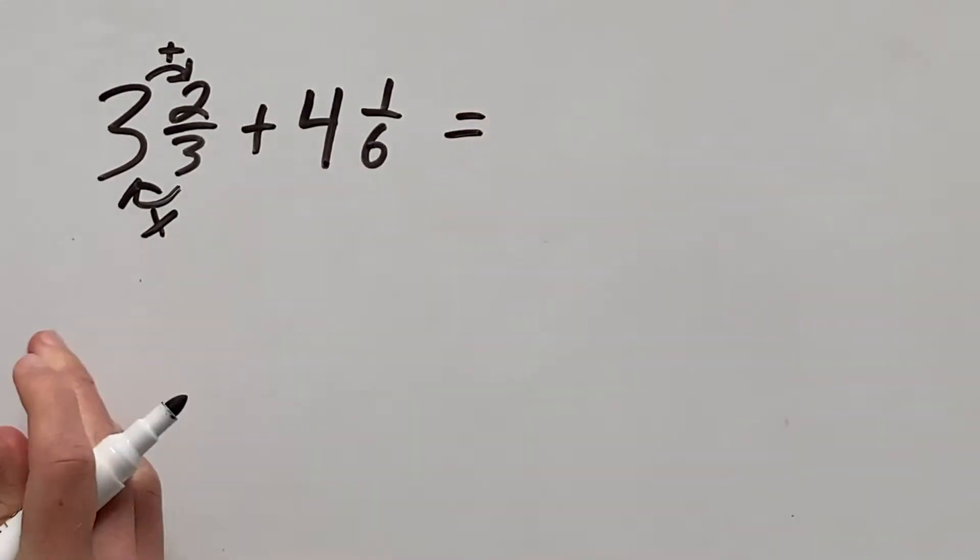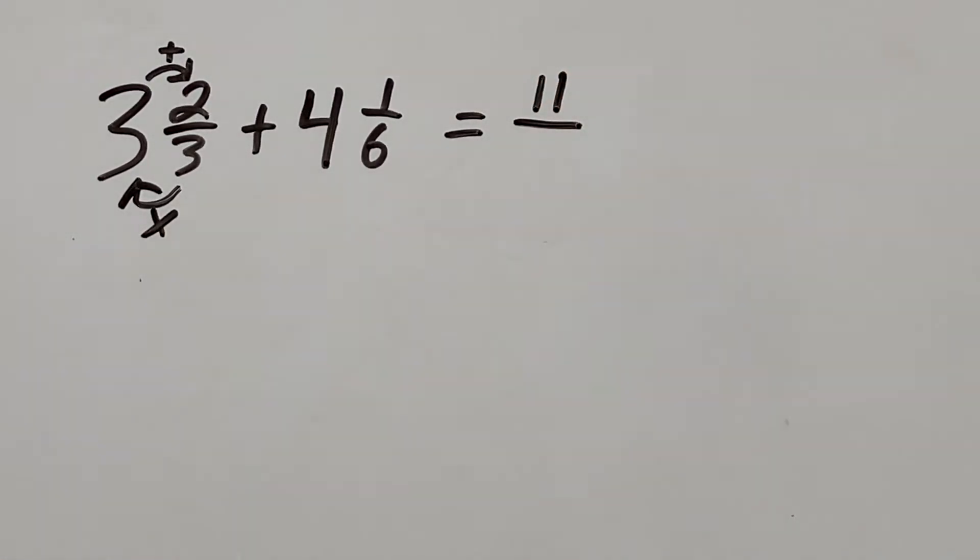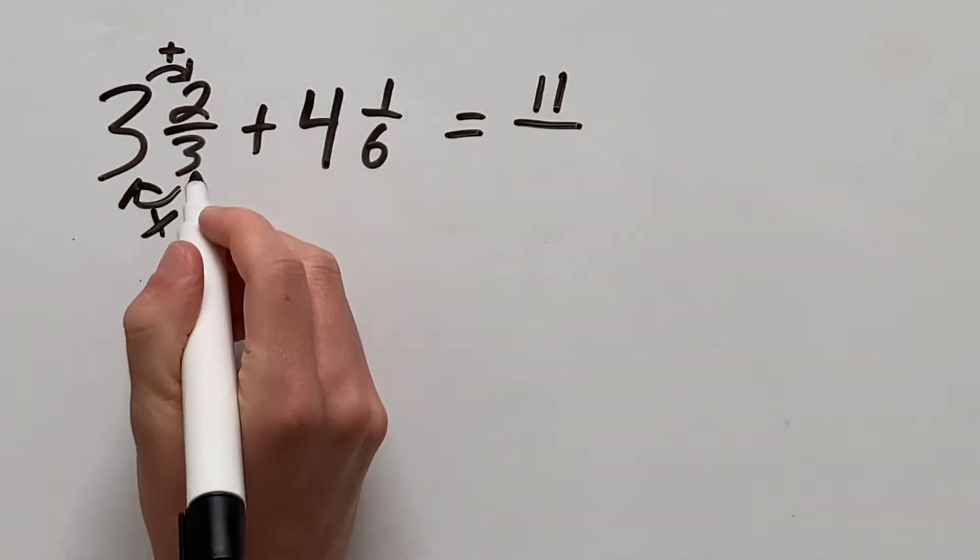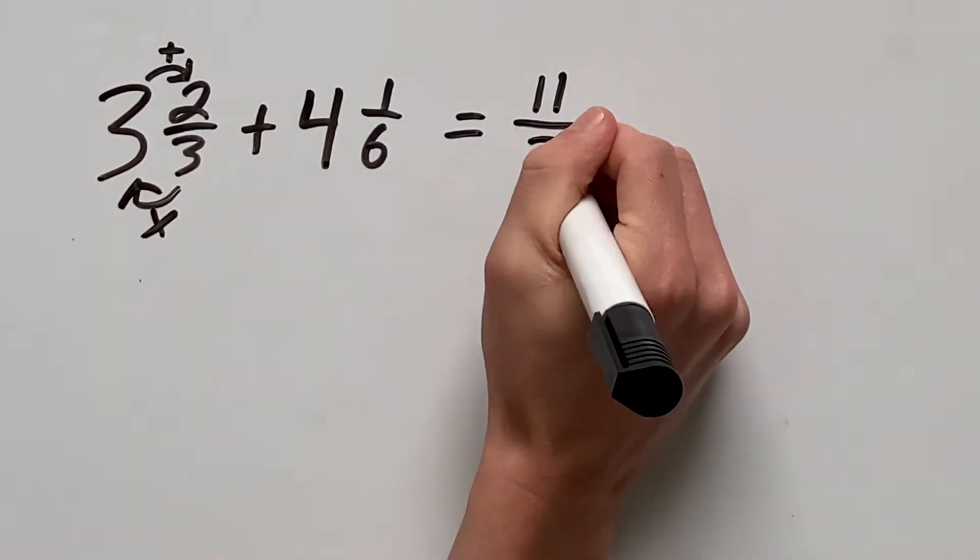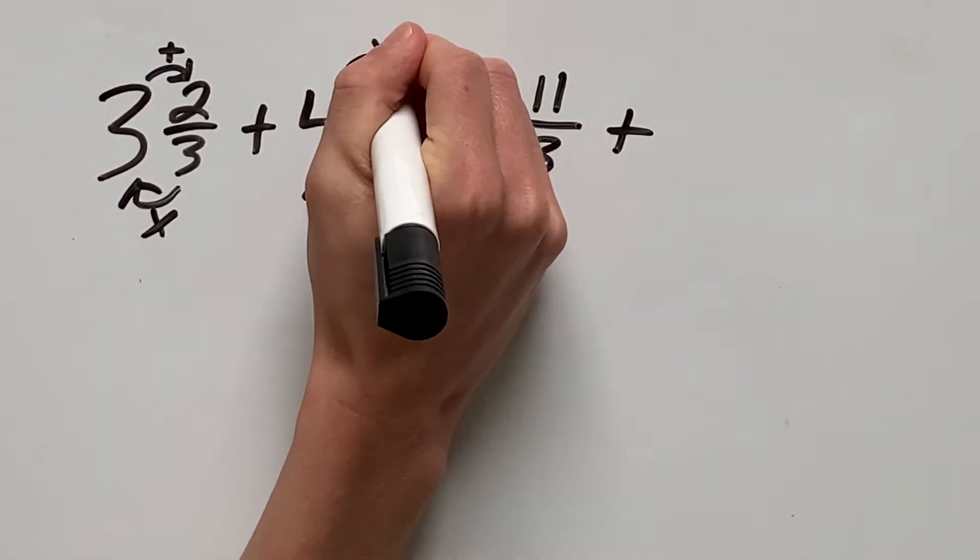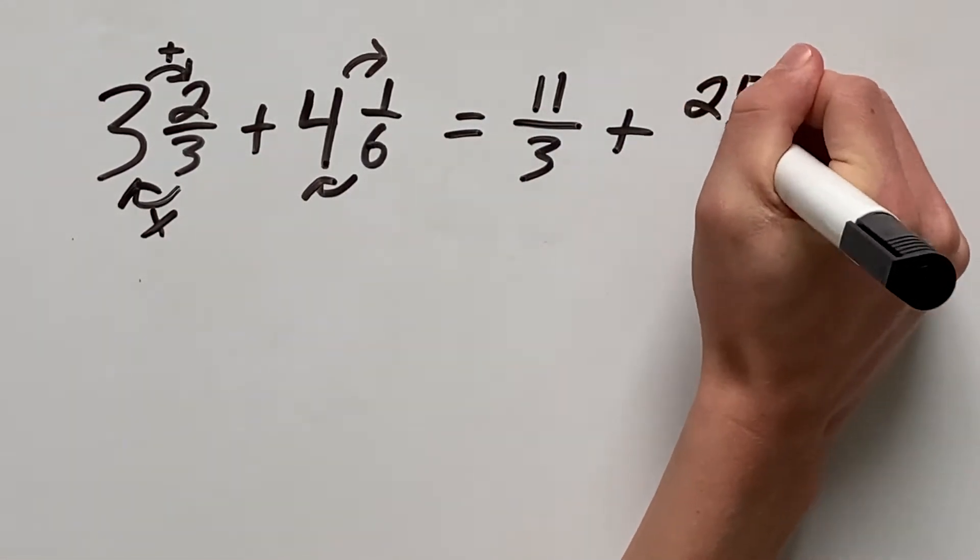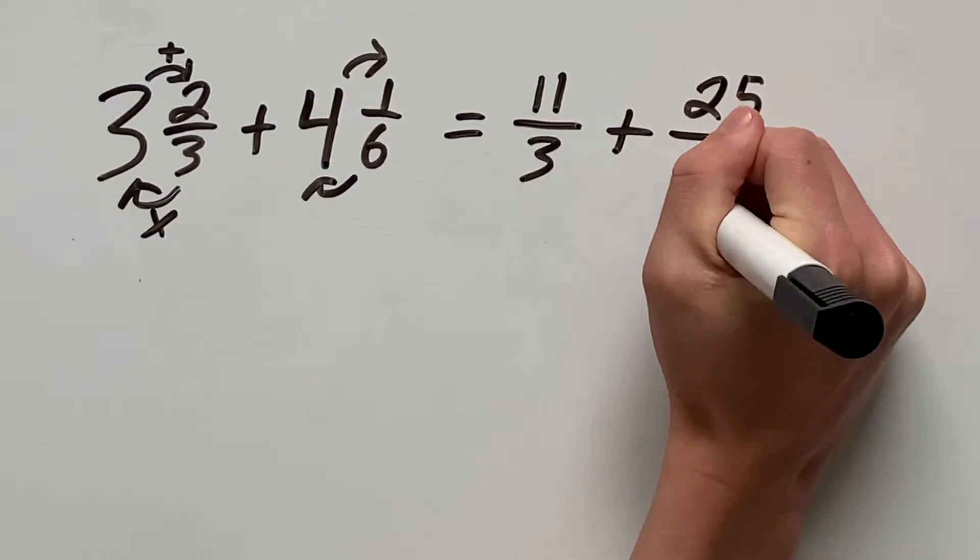So we can rewrite this problem as: we have 3 times 3 which is 9 plus 2 which is 11 over, and our denominator will always stay the same, so 3, plus, and this one we have 4 times 6 which is 24 plus 1 so 25 over 6.